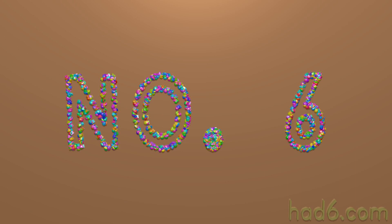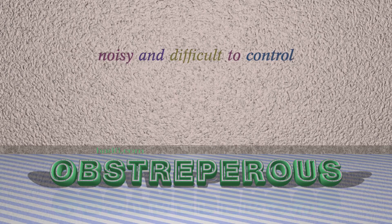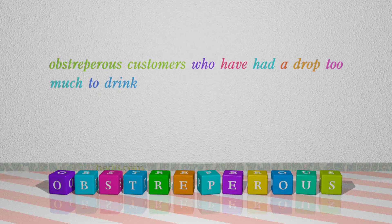Number 6: Obstreperous. Which means noisy and difficult to control. For example: obstreperous customers who have had a drop too much to drink.